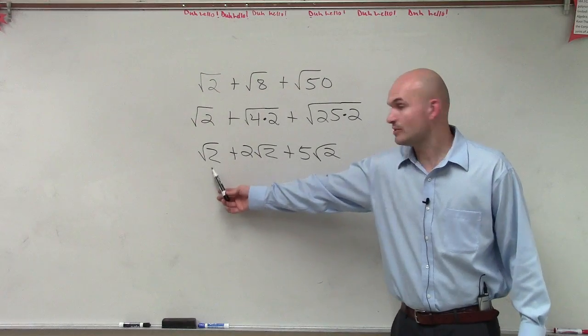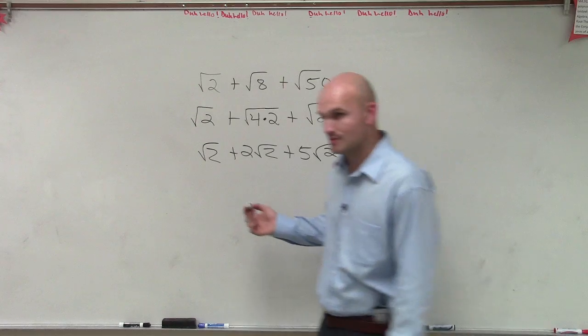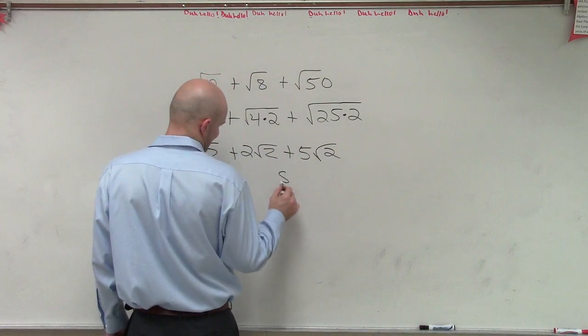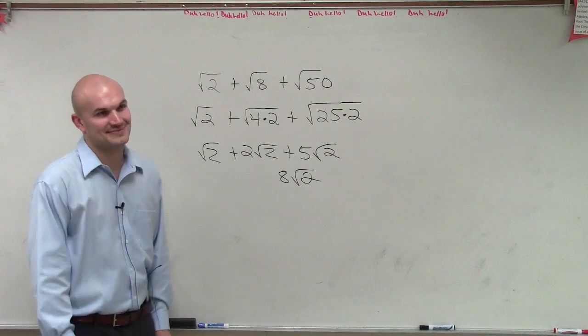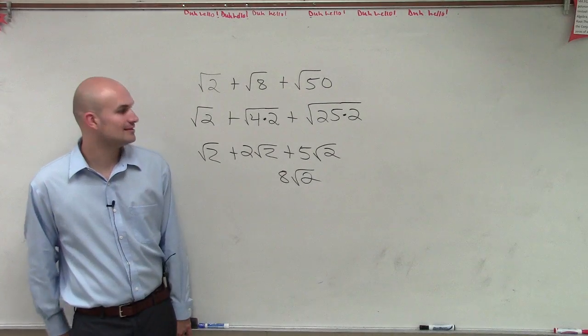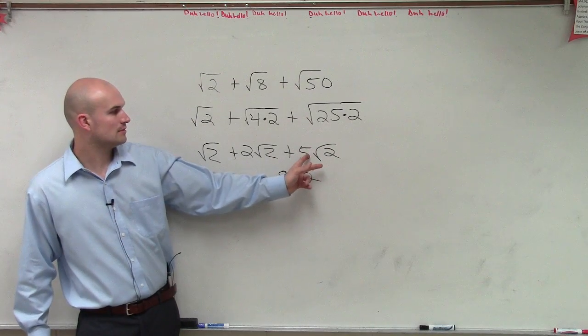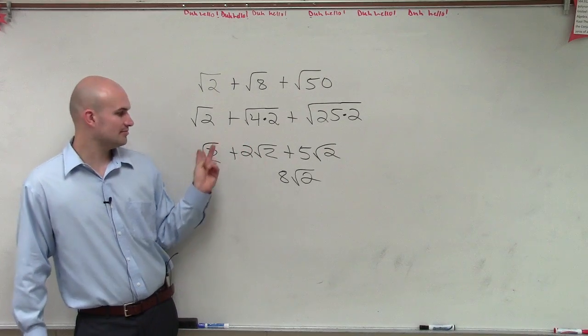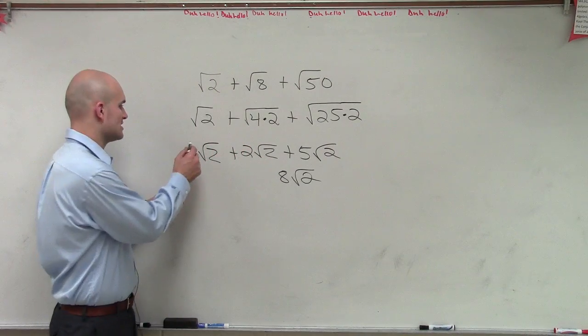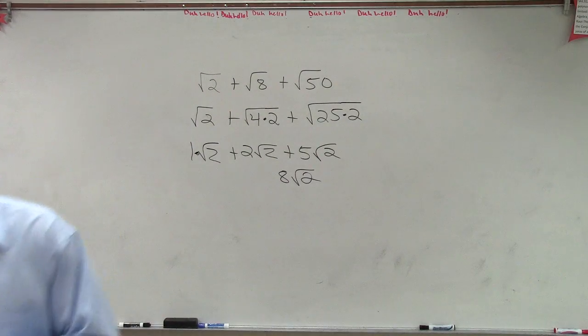So I have 1 square root of 2 plus 2 square root of 2 plus 5 square root of 2. Square root of 25 is 5. 5 plus 2 is 7, plus 1 is 8. Remember, there's a 1 times this. So 8 square root of 2.